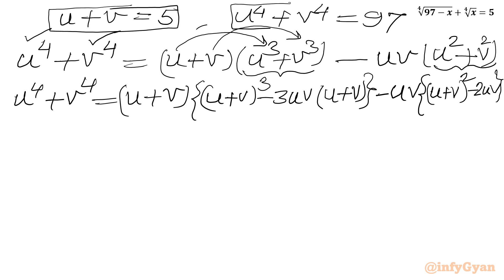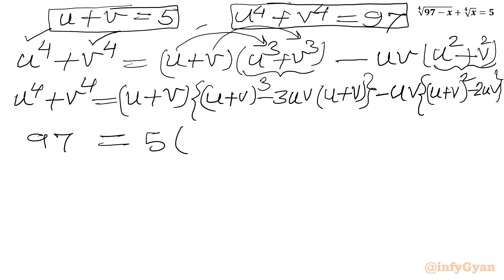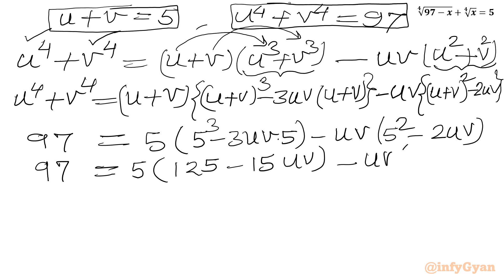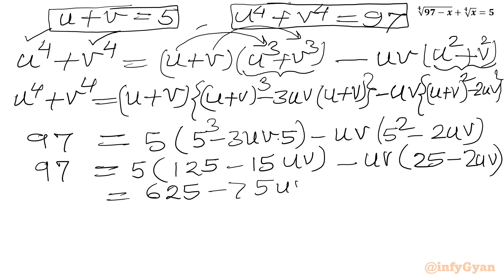Now applying all the values — u plus v is 5 and u⁴ plus v⁴ is 97 — I can write: 97 equals 5 times (5³ minus 3uv times 5) minus uv times (5² minus 2uv). Simplifying: 97 equals 5 times (125 minus 15uv) minus uv times (25 minus 2uv), which gives 625 minus 75uv minus 25uv plus 2u²v² equals 97.